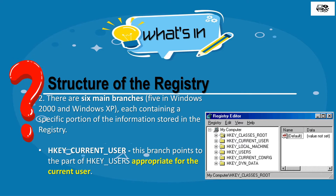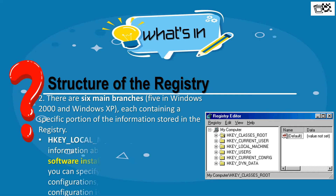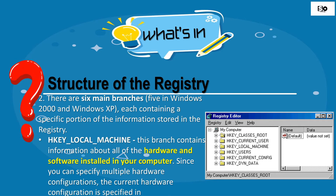Number two is the handle-to-register key Current User (HKEY_CURRENT_USER). This branch points to the part of each key users appropriate for the current user. Third is the HKEY_LOCAL_MACHINE. This branch contains information about all of the hardware and software installed in your computer. Since you can specify multiple hardware configurations, the current hardware configuration is specified in this branch.